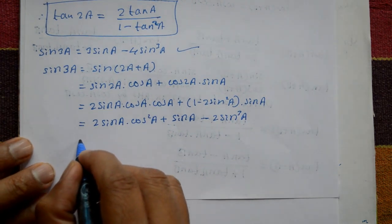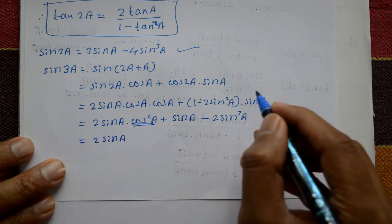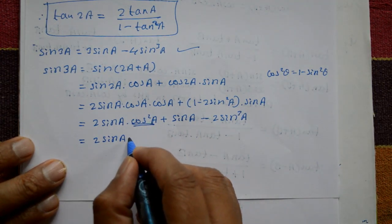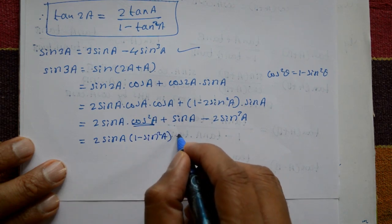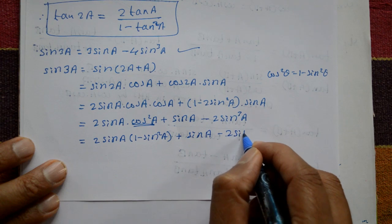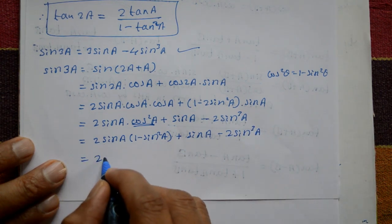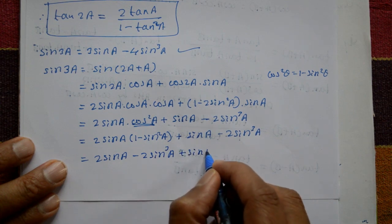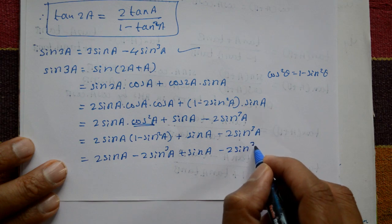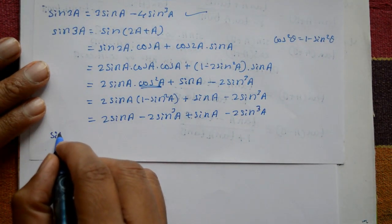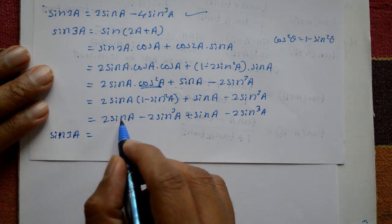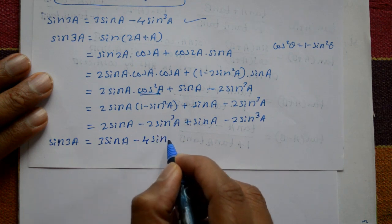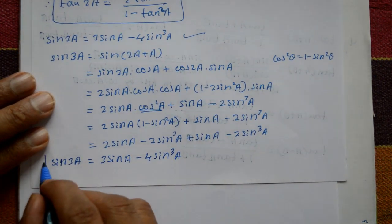Now this equals: 2 sin a, and change cos squared a to 1 minus sin squared a — basic identity — plus sin a minus 2 sin cubed a. Opening the bracket: 2 sin a minus 2 sin cubed a plus sin a. These combine: 2 sin a plus sin a is 3 sin a, and minus 2 minus 2 gives minus 4 sin cubed a. So sin 3a equals 3 sin a minus 4 sin cubed a. This is proved and is also a standard formula.